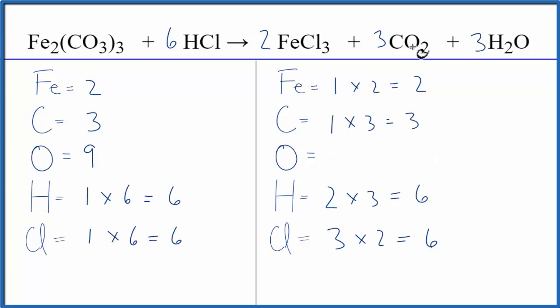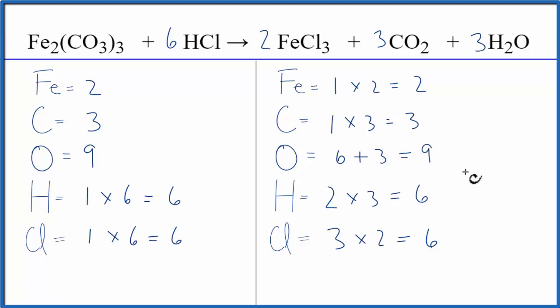We have two times three — that's six — plus one times three, and that gives us nine oxygens. And we're done.